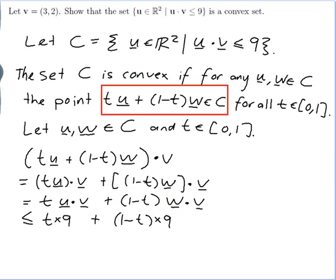So now I have t times 9 plus (1-t) times 9 so that's just going to give me 9 at the end.